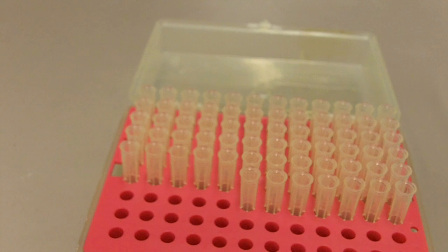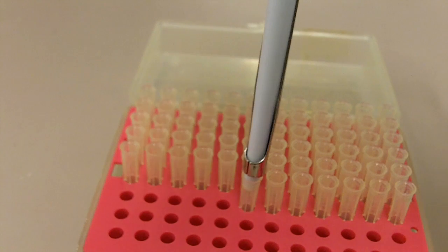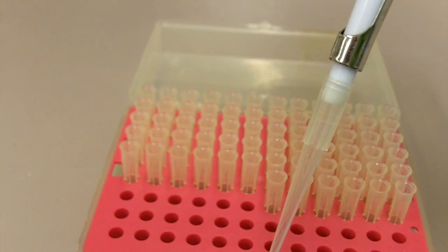That's how the ejector works. Now I'm going to show you how to put on a tip properly without damaging the pipette. You should just press down the pipette and twist. And now you have the tip.